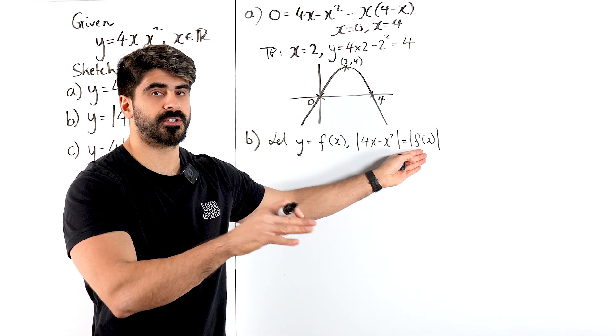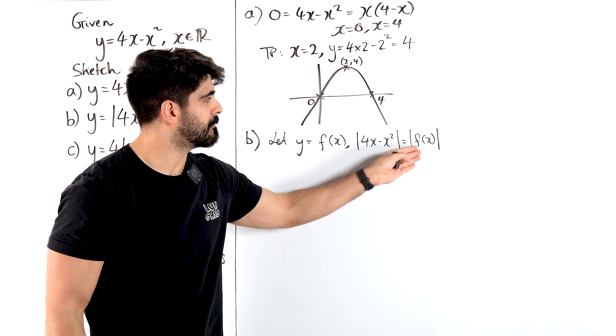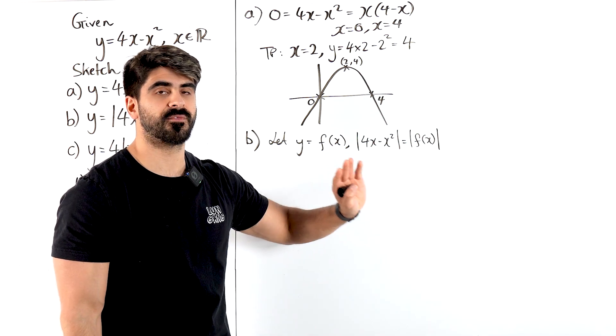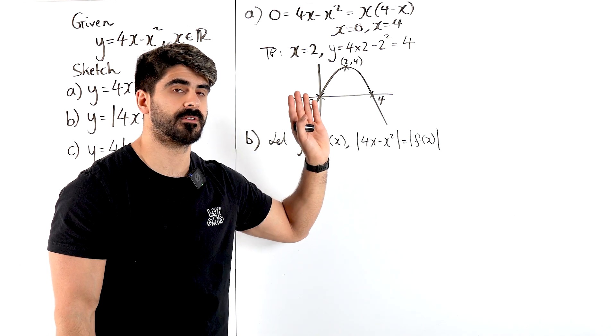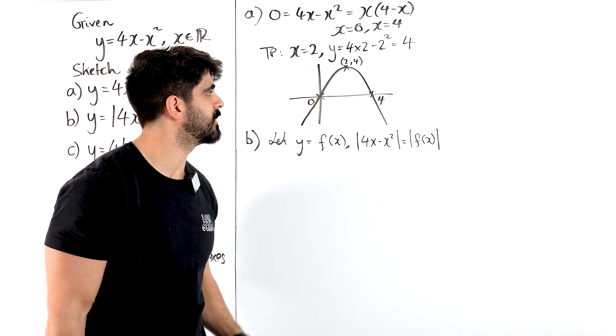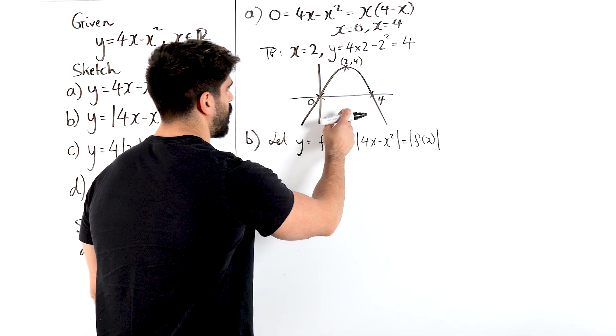Because remember, f of x are our outputs, those are our y values. If we put a modulus around it, we're saying all negative y values become positive. And all positive y values, nothing happens.